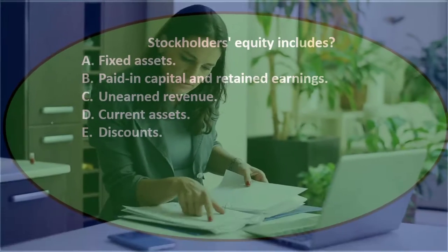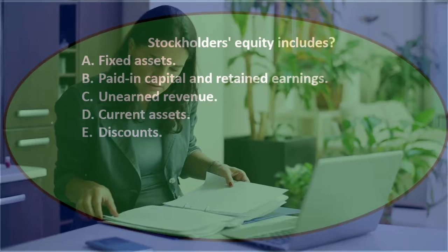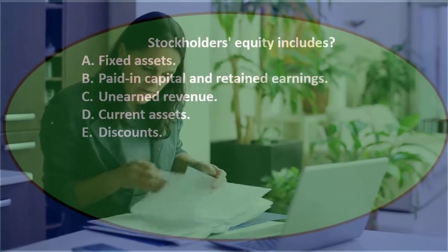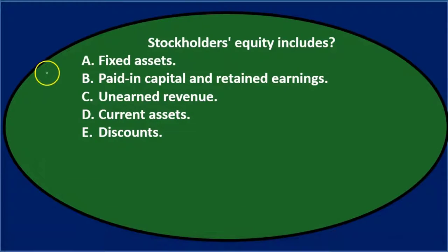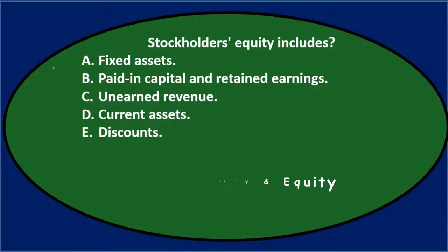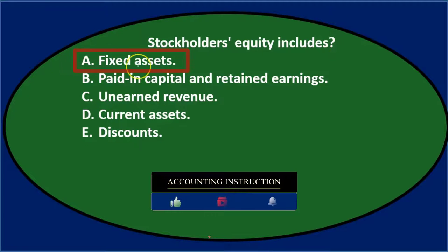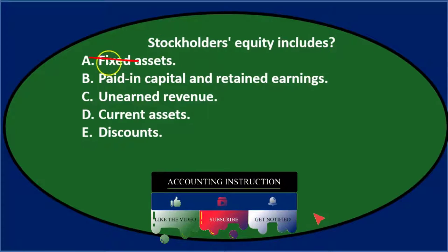Let's use the process of elimination to narrow this down. Stockholders equity — the accounting equation is assets, liabilities, and equity. So if the term has the word assets in it, it's probably not part of the equity section. It's not going to be A fixed assets, and it's not going to be any kind of asset, whether fixed, current, or non-current.